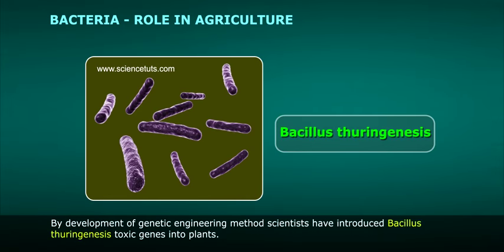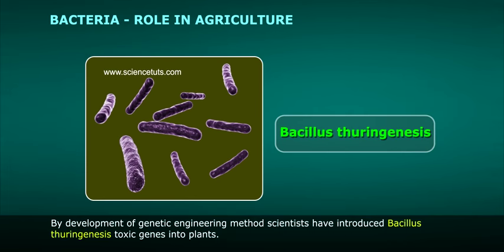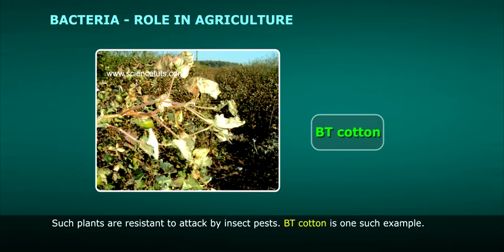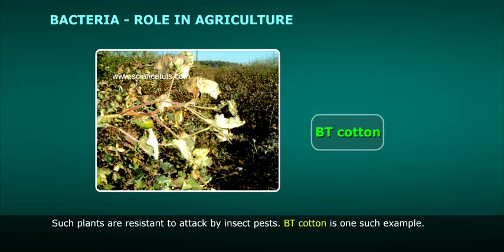By development of genetic engineering methods, scientists have introduced Bacillus thuringiensis toxin genes into plants. Such plants are resistant to attack by insect pests. Bt cotton is one such example.